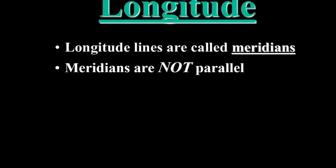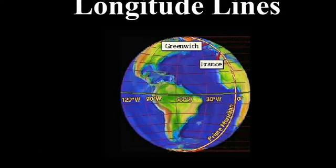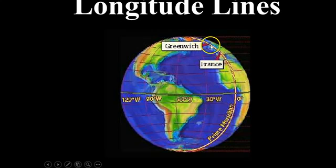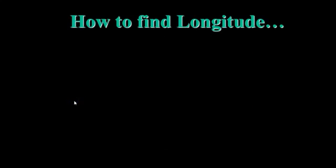Lines of longitude are called meridians — hence the prime meridian. Meridians are not parallel; instead they touch or connect at the north and south poles. In this picture we can see the prime meridian running through Greenwich, England, though it also runs through other locations on earth. At the north pole, all lines of longitude meet, and they also meet at the south pole, dividing the earth into eastern and western hemispheres.